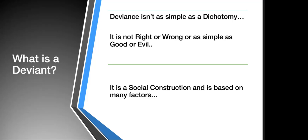For those of you who are not familiar with deviance, you probably are familiar with the name. You probably don't think about someone calling you a deviant as a good thing. But deviance isn't a simple dichotomy — it's not good or bad, right or wrong. It's essentially a social construction, and like many social constructions in everyday life, it has been utilized as a system of control.